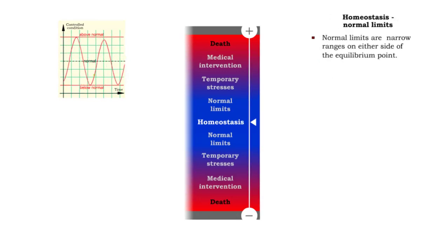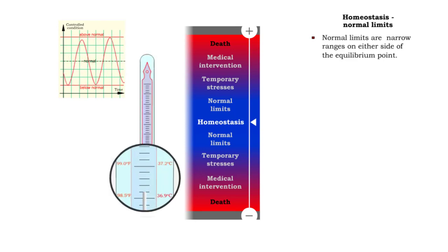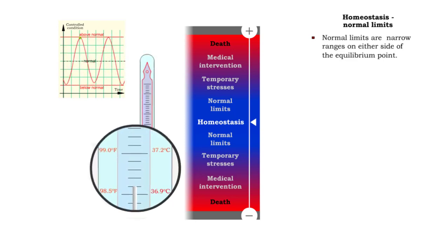The equilibrium point can change over a narrow range, the body's normal limits, and continue to sustain relatively good health. For example, while a body temperature of 98.6 degrees Fahrenheit may be optimal, a change to 99.2 degrees would be within normal limits.